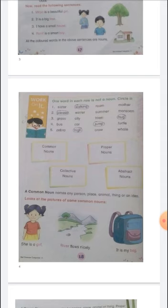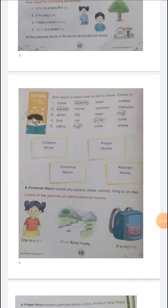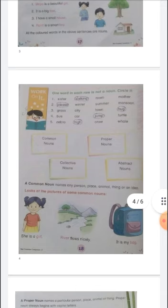Winter, summer, and monsoon are all nouns. In the third row: grass, city, and town are nouns, but huge is not a noun. In the fourth row: bus, car, and turtle are nouns, but jump is not a noun — it is an action word. In the fifth row: zebra, crow, and whale are nouns, but high is not a noun.